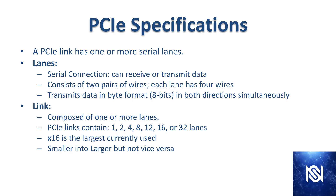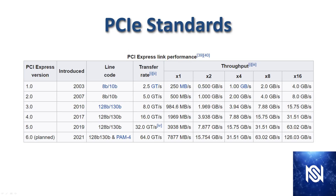Here we have a table from Wikipedia showing the speeds and limits of each PCIe version. PCIe was first introduced in 2003, and you can see the transfer rates and what was possible with different lane sizes across each version. PCIe version 6.0 is coming out in 2021, and notably there's still no x32 on that standard, but they continue to increase speed through other means.